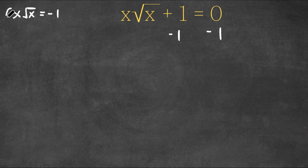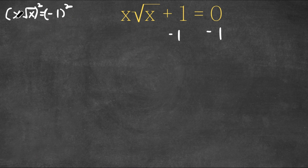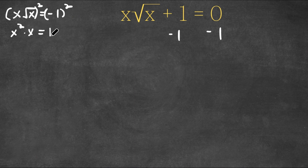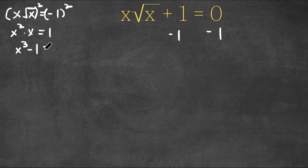Now I'm going to go ahead and square both sides. X times the square root of x, squared — well, x squared is simply just x squared, so we have x squared times the square root of x squared, which is simply just x. This is equal to negative one squared, which is one. Now x squared times x is x to the power of three. So we have x to the power of three minus one is equal to zero.